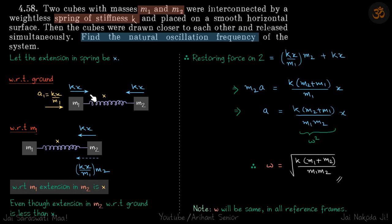Both blocks will be performing SHM about their own equilibrium positions, and the amplitudes of each of these masses will also be different. The sum of their amplitudes will be X. So this way, if we try to do the problem, it's very complicated.